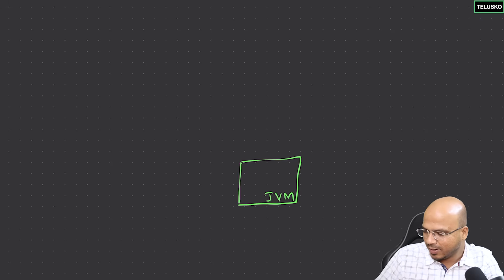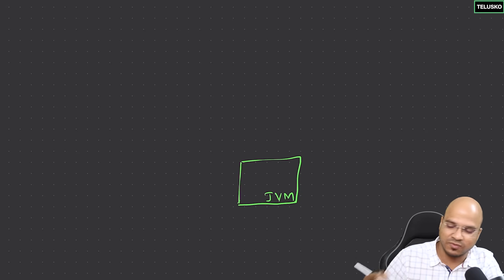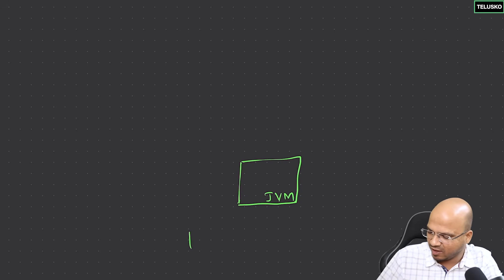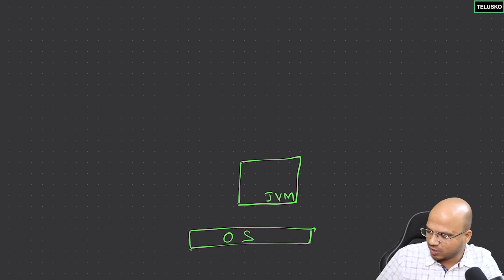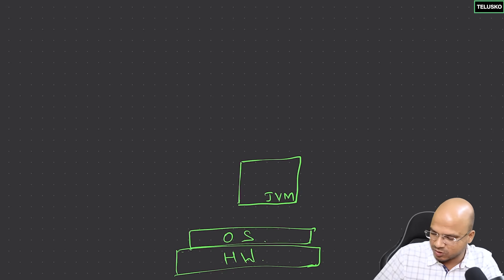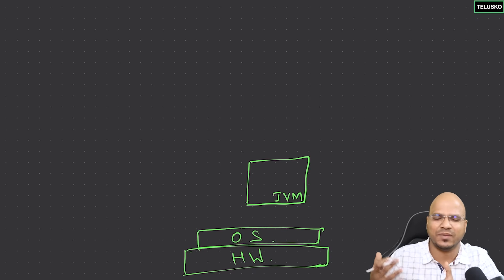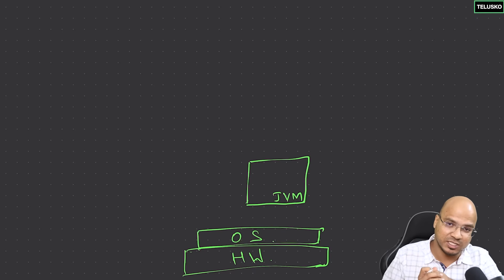So we have JVM. Now what JVM says is it will work. But JVM works on which environment? Underlying we have your OS, and your OS is working on hardware. You'll have hardware — it can be a laptop, a desktop, a phone, doesn't matter. On top of hardware we have an OS, and on top of that we have JVM. JVM's job is to execute Java code. So whatever Java code you create, JVM will execute that.